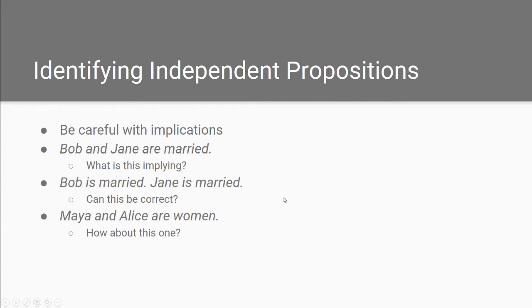Let's continue with conjunctions and try to identify the independent statements. Consider: 'Bob and Jane are married.' Right away you can see the issue — if we break this into 'Bob is married' and 'Jane is married,' can this be correct? Because the original conjunction implies that Bob and Jane are married to each other, but the statement 'Bob is married' leaves unclear whether Bob is married to Jane or to someone else. On the other hand, consider 'Maya and Alice are women.' If we break this into 'Maya is a woman' and 'Alice is a woman,' we can readily identify those two independent statements.